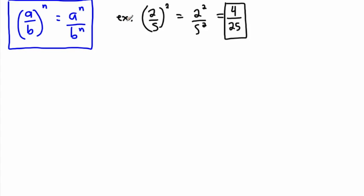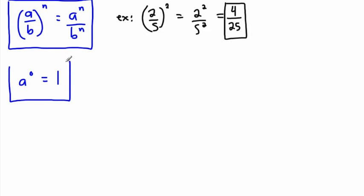We have another rule. What if we have a to the power of 0? This is a key thing — a really cool one. Anything to the power of 0 is always equal to 1.